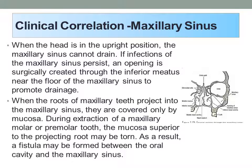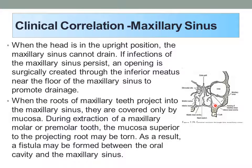Here's a clinical correlation about the maxillary sinus. Interestingly, the maxillary sinus cannot drain if your head is in the upright position — the opening to the maxillary sinus is pretty high up. So if you have persistent maxillary infections, a surgeon can make another opening into the sinus through the inferior meatus to promote drainage. In addition, if you consider the maxillary teeth, their roots project up into the maxillary sinus and are only covered by mucosa. So when one of these teeth gets extracted, you could tear the mucosa and create a communication between the oral cavity and the maxillary sinus, potentially developing a fistula between these two cavities.